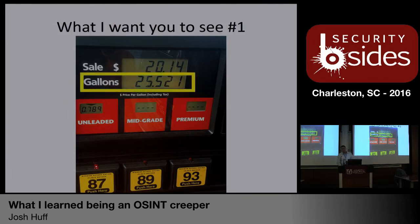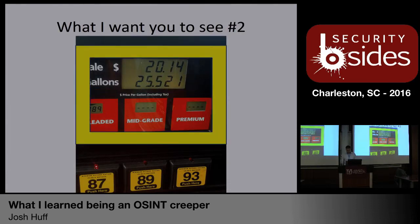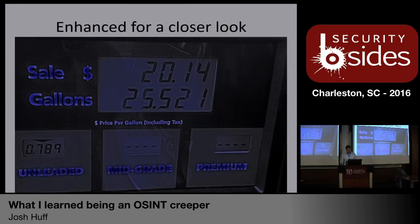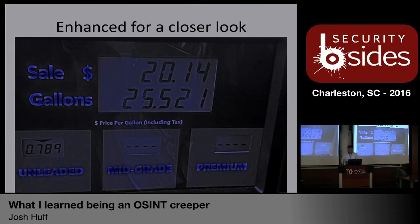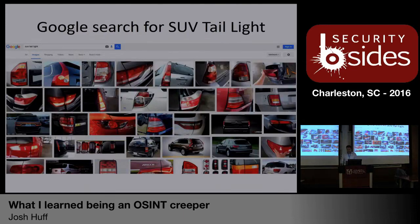They just put 25 and a half gallons of gas into something. You can pull a couple inferences and maybe say it's a truck or an SUV — a larger vehicle. Second thing I want you to notice is the background. You can't quite make out the person to identify them, but there are some key identifiers of the vehicle there. You can see that circular half-moon of the tail light, and it's actually a larger vehicle — SUV, truck, minivan, something like that.